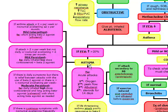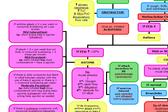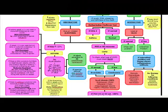For acute attacks of asthma, the treatment steps are: first, oxygen; second, peak flow; third, albuterol; and fourth, steroids for 14 days, then wean off. If the patient has acute shortness of breath, give IV methylprednisolone; otherwise, give oral prednisolone and taper off after 14 days.